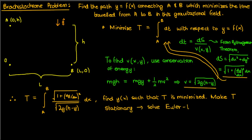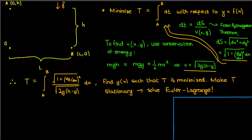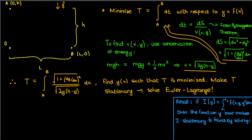Links in the description. Just to give some context, recall that if I had this functional I, which involved an integral from x1 to x2 of some capital F of (x, y, and y prime), then the function y which makes the functional I stationary can be found by this differential equation, the Euler-Lagrange equation. So all we have to do to make this time functional stationary is apply the Euler-Lagrange equation to our brachistochrone problem.